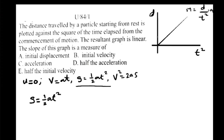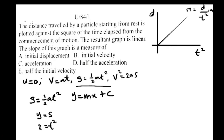This is the graph plot. A linear graph is given as Y = MX + C, where C is the intercept, X is the variable on the X-axis, and Y is the variable on the Y-axis. The Y-axis variable is S (distance), so Y is equivalent to S. The X-axis variable is T², so X is equivalent to T². There is no intercept along the Y-axis, so C equals 0. By comparing, M is equivalent to ½a.